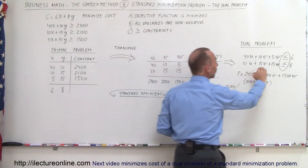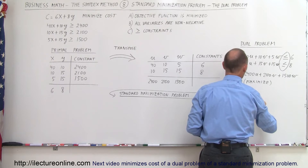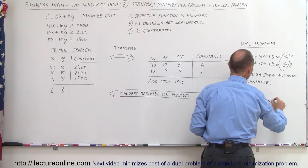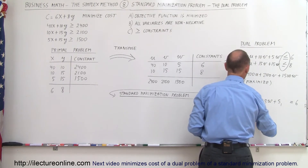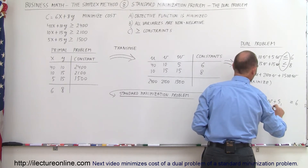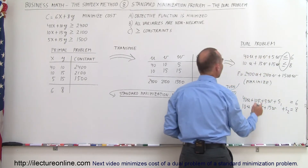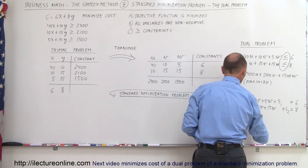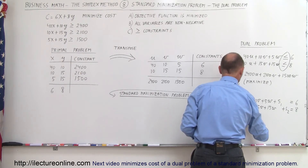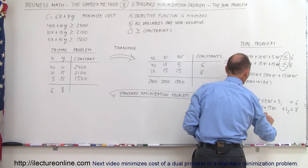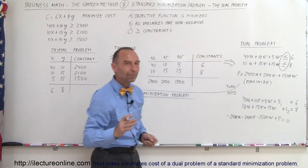To turn these into equations, I need two slack variables. So I write this as 40u plus 10v plus 5w plus slack variable one equals 6. And here: 10u plus 15v plus 15w plus a second slack variable equals 8. Then the profit function — moving everything to one side — becomes: minus 2400u minus 2100v minus 1500w plus profit equals zero. And that becomes the simplex tableau.